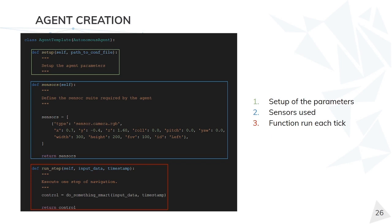In order for Scenario Runner to use an AI stack, these have to be created in a specific way, which is what we call agents. First of all, they have to inherit from autonomous agent and three functions are needed. The first one is the setup, which initializes the agent parameters. The second one is the sensors method where the sensors used by the agent are defined. And the third and last one is run step, which is a function called each tick that will handle the agent behavior.